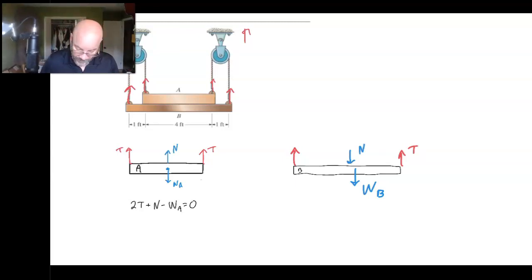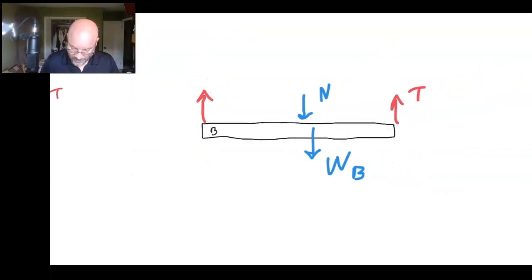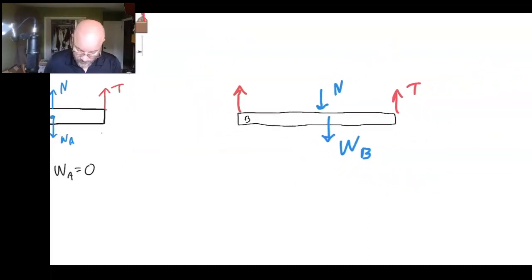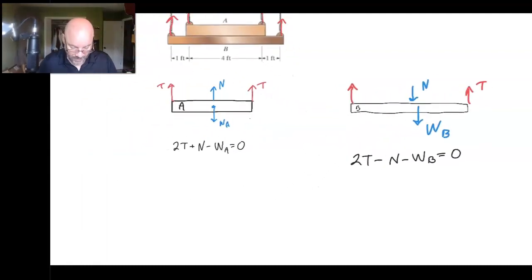And then, we can write our algebraic equation, our relationship here. We're going to have 2T minus N minus WB is equal to 0. All right, pretty good, let's back off, let's see what we got, what are the things that we don't know?